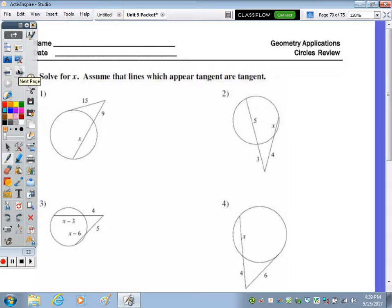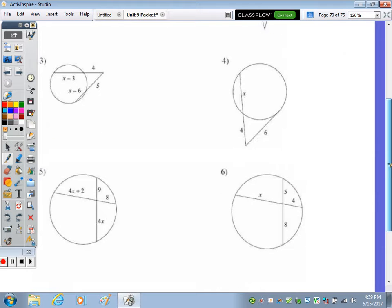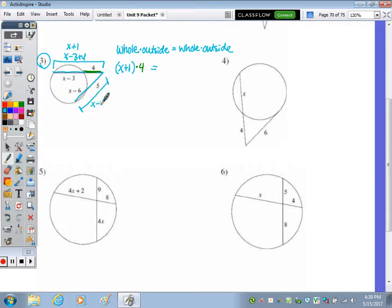Number 3, we're going to go over on the back, numbers 3, 5, and 8. So if we look at 3, 3 has a secant and a secant. I have a little saying, it is for two secants, whole times outside, or external, equals whole times outside. So the whole segment from here over would be x minus 3 plus 4, or combine negative 3 plus 4, just x plus 1. So the whole on the left would be x plus 1 times the outside piece, outside is 4, equals this whole would be the x minus 6 plus 5, combining those would be x minus 1. So the whole x minus 1 times the outside, which is 5.